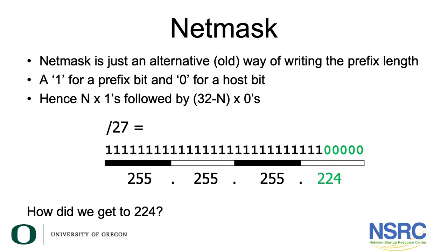A net mask, also known as subnet mask, is just an alternative old way of writing the prefix length. This is simply a one for a prefix bit and a zero for a host bit. A net mask is written as n times ones followed by 32 minus n times zeros. For example, a /27 prefix will be written as 27 ones followed by five zeros, and its decimal representation would be 255.255.255.224.